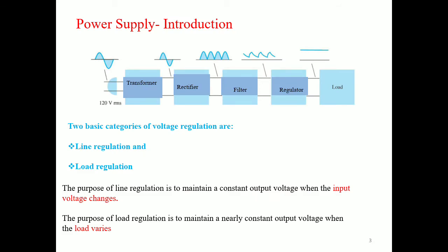What is voltage regulation? It is nothing but it gives a constant output voltage irrespective of the input voltage. The block diagram shows a transformer, rectifier, filter, and the IC voltage regulator. The transformer steps up or steps down the AC voltage provided by the wall outlet to the desired amplitude through the action of a magnetic field.